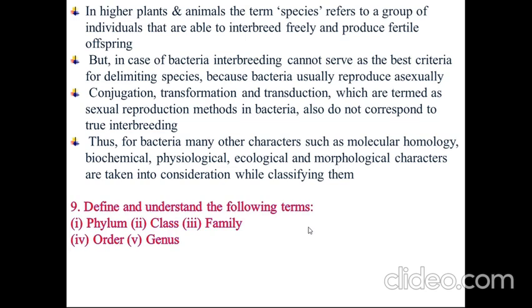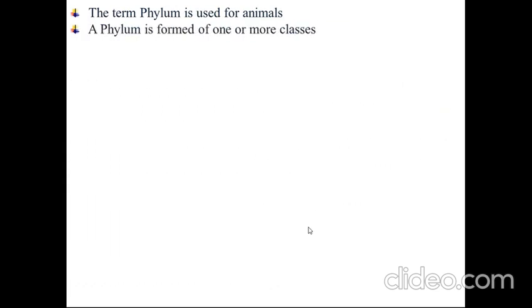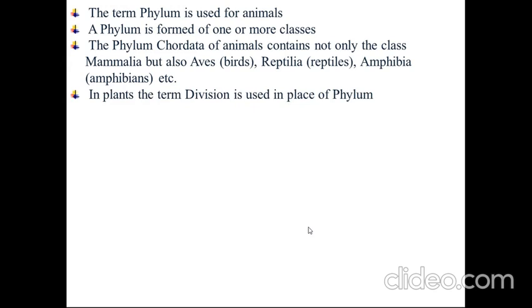Define and understand the following terms: phylum, class, family, order, genus. Starting with phylum — phylum is a category higher than that of class. The term phylum is used for animals. A phylum is formed of one or more classes. The phylum Chordata of animals contains not only the class Mammalia, but also Aves the birds, Reptilia the reptiles, Amphibia the amphibians, etc. In plants, the term division is used in place of phylum.